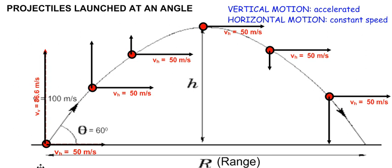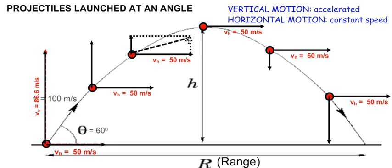In contrast, the vertical component of the velocity will be continuously decreasing as it reaches its maximum height, where it becomes zero, and then continuously increasing in a downward direction, hitting the ground with exactly the same speed vertically downwards as it was projected vertically upwards. The resultant velocity of the projectile at any instant can be found as the resultant of the horizontal velocity and the vertical velocity components.